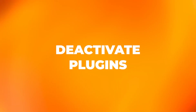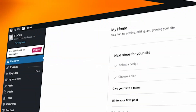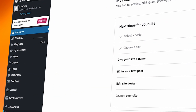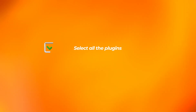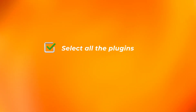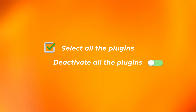Deactivate the plugins. To deactivate the plugins, log into the WP admin area. In the menu on the left hand side you'll see Plugins. You can then select all the plugins by checking the plugin box at the top of the list. Once selected, deactivate them all via the Bulk Actions drop-down menu.